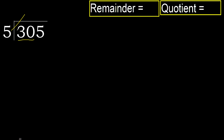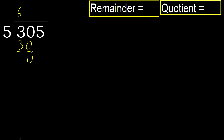5 multiplied by 7 is 35, which is greater. Multiply by 6 — 30 is not greater. 30 minus 30 is 0. Next, eliminate 0 on this side. Bring down 5.